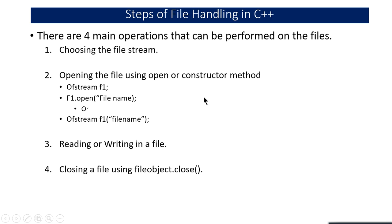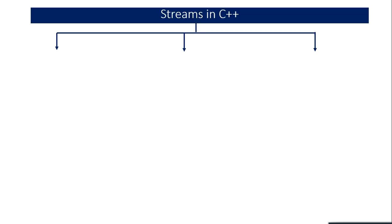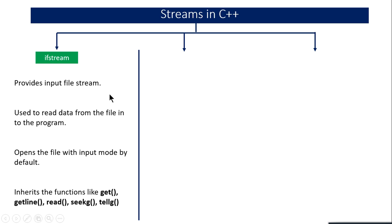There are generally three stream classes in C++: ifstream, ofstream, and fstream. ifstream — where 'i' stands for input and 'f' stands for file — provides input file stream. If you are reading data from files you will use ifstream; you cannot write data into the file using ifstream. It opens the file in input mode by default and has built-in functions like get, getline, read, seekg, and tellg for reading data from files.